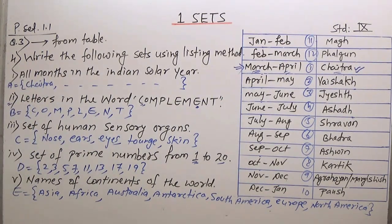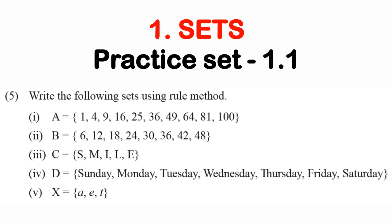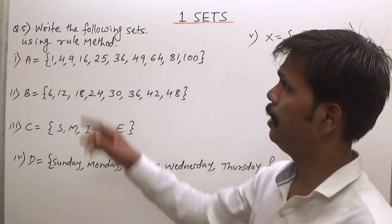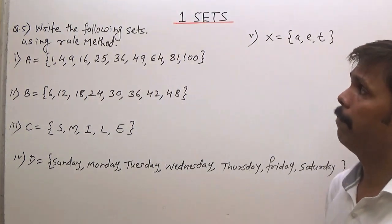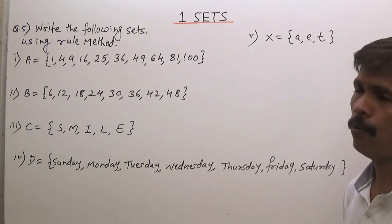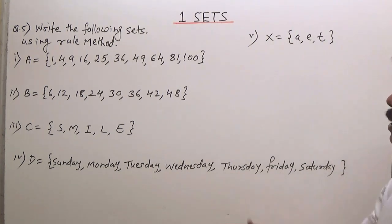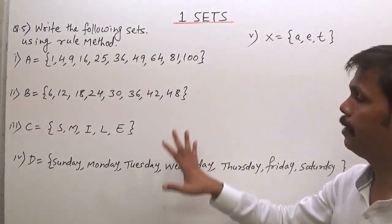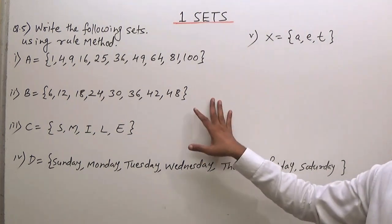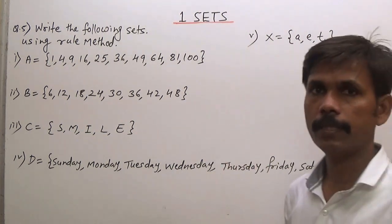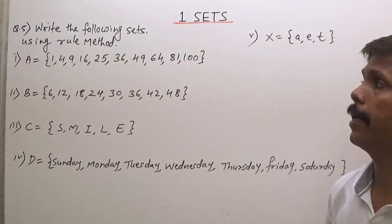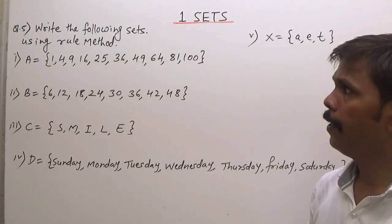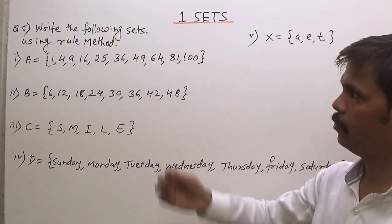So this completes question number 4. Friends, let's see question number 5: write the following sets using rule method. The rule method is also called set-builder form. There are 5 questions. The first question is already written in listing method and we have to convert it to rule method using a variable and a property.